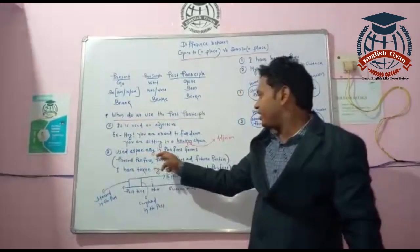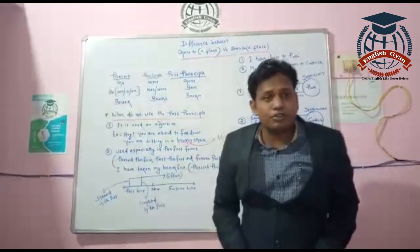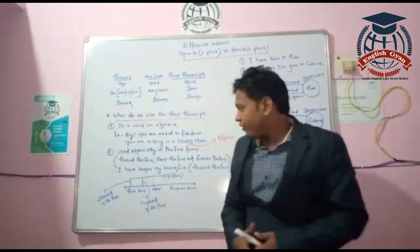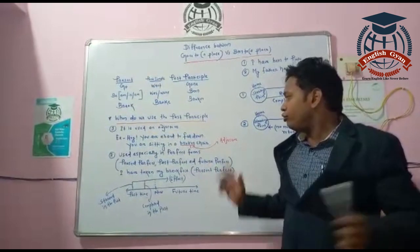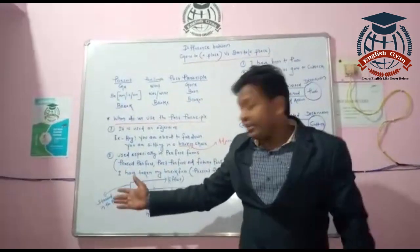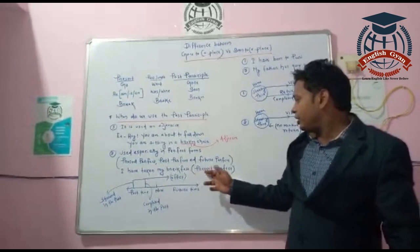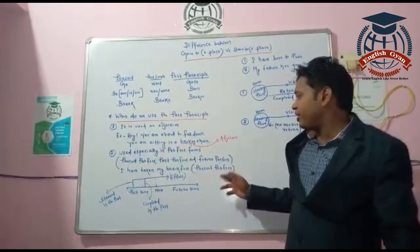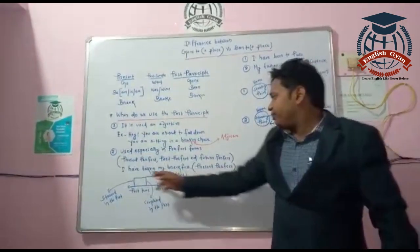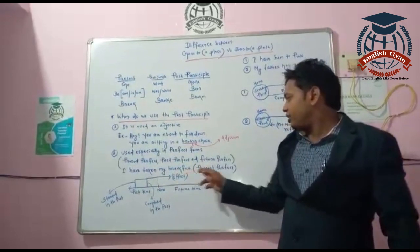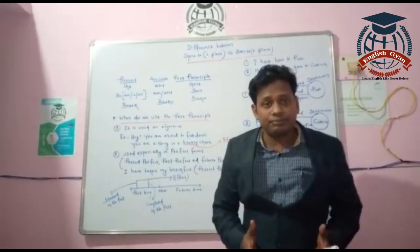The past participle form is also used especially in perfect tenses. The perfect tenses are: present perfect, past perfect, and future perfect. For example, 'I have taken breakfast' — this is present perfect. So what exactly is the perfect tense?